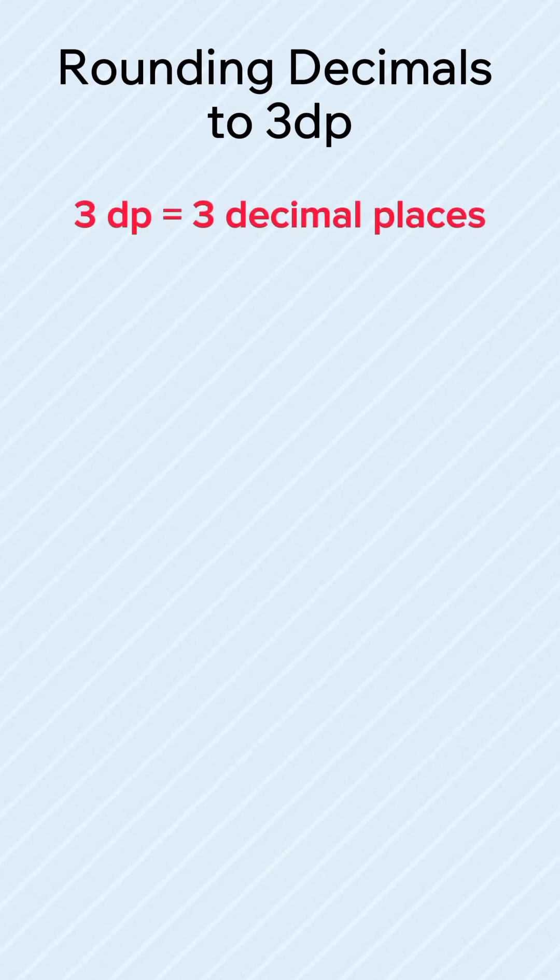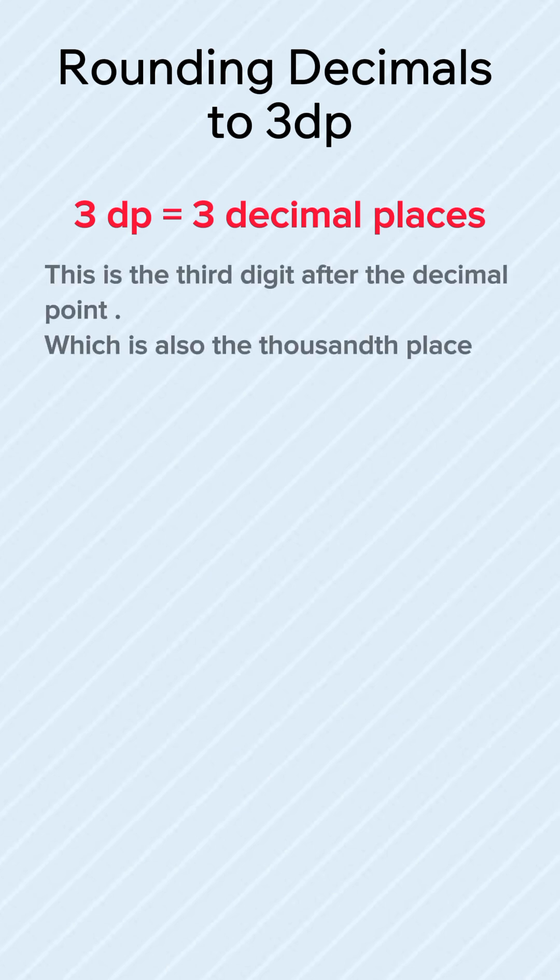3DP means three decimal places. That is, the third digit after the decimal point. Also, rounding to 3DP is same as rounding to nearest thousandth.